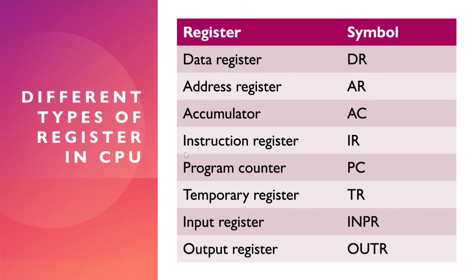Types of registers include the Program Counter, Temporary Register, Input Register, and Output Register. Each individual register has its own individual task. That is the overview for this video — see you in the next video on our channel. Please subscribe. Thank you.